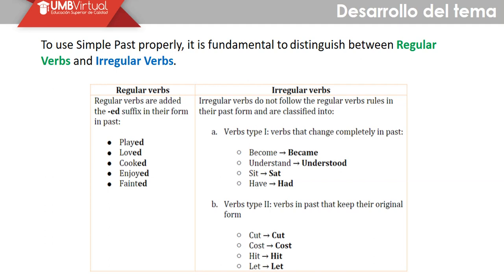For irregular verbs, they do not follow the regular verb rules. They are classified into: verbs type 1 — verbs that change completely in the past: become/became, understand/understood, sit/sat, have/had; and verbs type 2 — verbs in past that keep their original form: cut/cut, heat/heat, and light/light. One important example is the verb 'read' — in the past we don't say 'reed,' but also 'read,' with a different pronunciation.